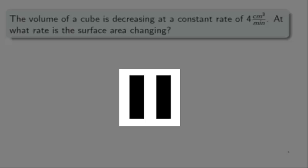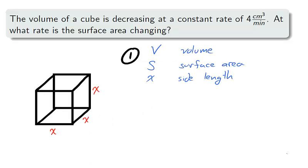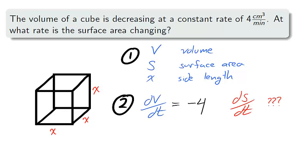Be sure to diagram. We begin by diagramming a cube. Our first question. There are no constants, and we have three variables: V for volume, S for surface area, and X for side length.